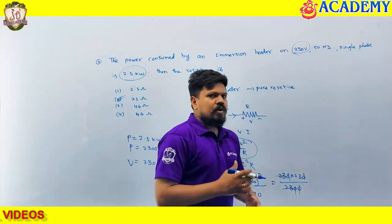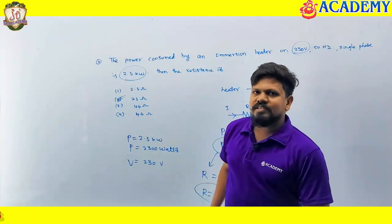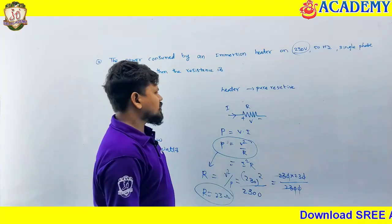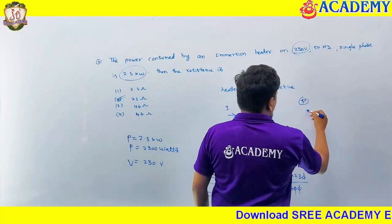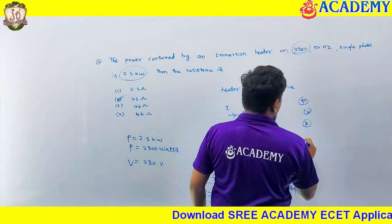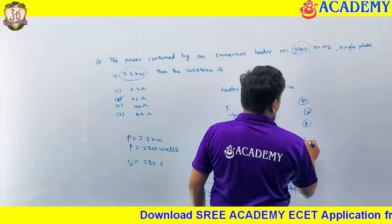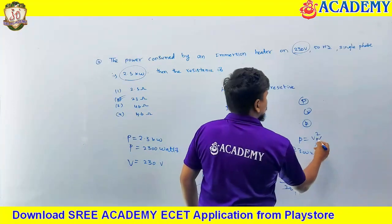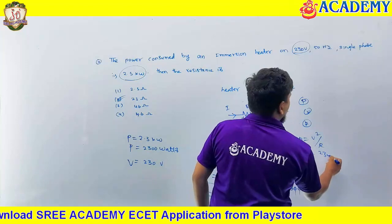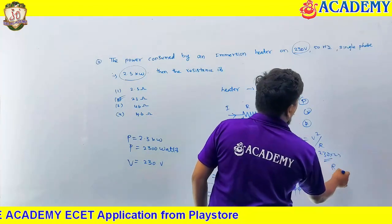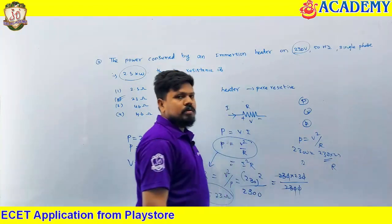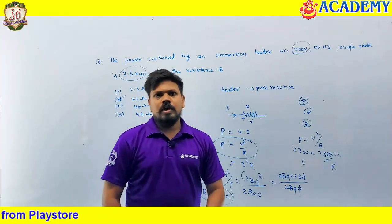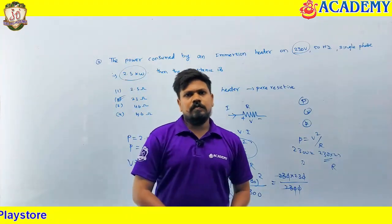So in the exam, directly: resistance they are asking, power they have given, voltage they have given. We know P equal to V squared by R. Substitute 2300 and 230 into 230, divided by R — directly we get R equal to 23. In the exam, directly within 10 or 15 seconds we have to do this model of question.